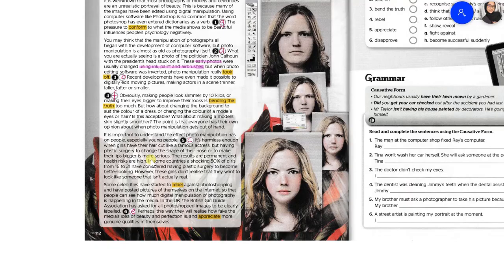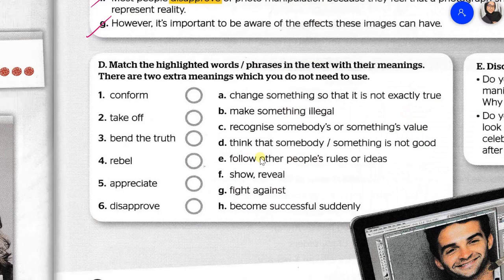So there you go — that is our answer for Task C. If you have any questions or anything you do not understand, please do not be shy to ask. Now let's do the last task. Task D: match the highlighted words or phrases in the text with their meanings. There are two extra meanings which you do not need to use. The words are: conform, take off, bend the truth, rebel, appreciate, disapprove.